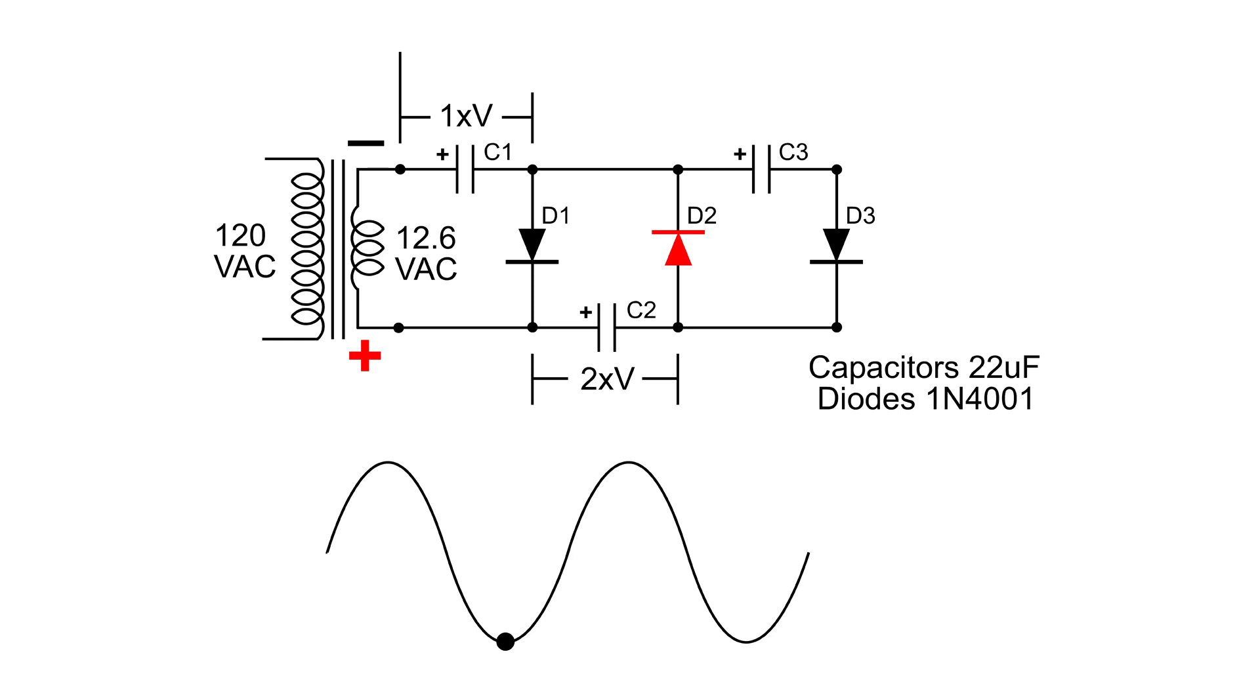Now when we go back to the next positive cycle, D1 is going to conduct, D3 is going to conduct, and D3 is going to allow C2 to charge C3 to 2 times V. So if we measure our voltage across C1 and C3 from end to end, this is where we get our 3 times V.